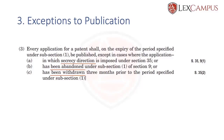Exception A — secrecy direction — is different from B and C because in B and C, the application will never see the light of day. Whereas in A, the moment the secrecy direction ceases to exist, the application is published. So there is a possibility of publication in the case of a secrecy direction, whereas in abandonment and withdrawal, there is no possibility of publication.